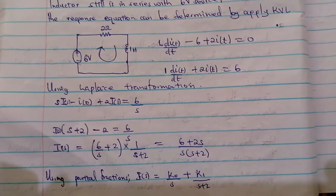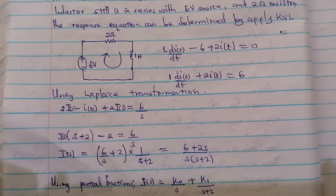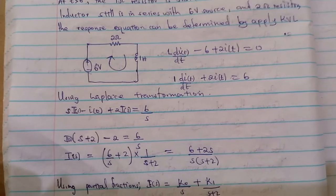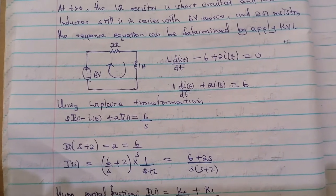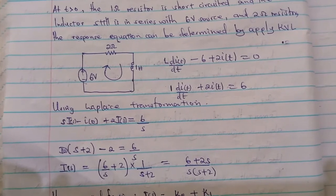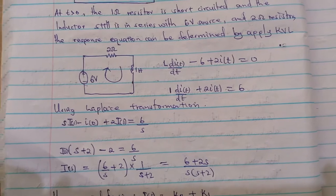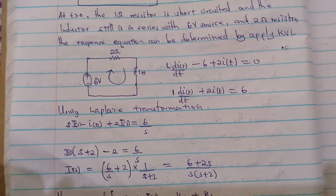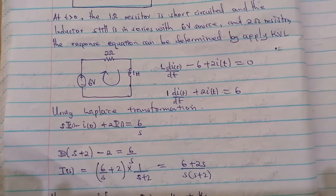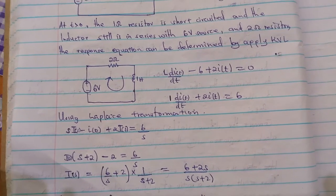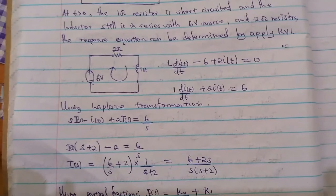The next step is to simplify the equation by substituting known values — the inductance is given as one Henry. Applying the Laplace transformation, we get the s-domain equation. The Laplace transform of di/dt is s·I(s) minus i(0), which represents our initial conditions. Then plus 2·I(s) equals 6/s, since six is a constant. Simplifying this equation gives us the expression shown below.